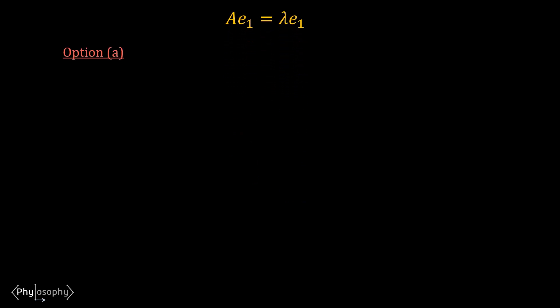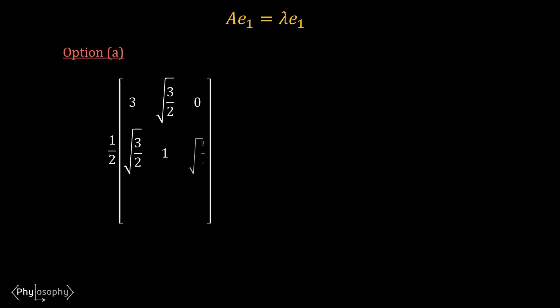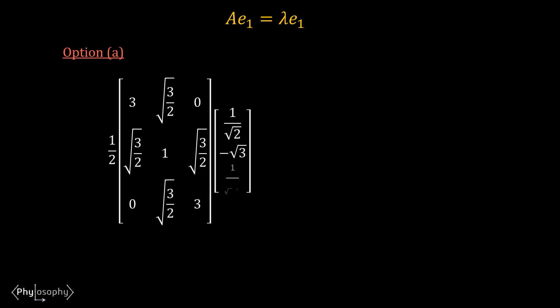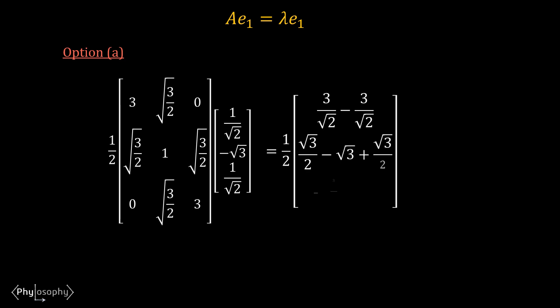For option A, if you multiply the eigenvector with matrix A, you will get a vector whose all elements are 0. Therefore, the eigenvector given in option A satisfies the equation A·e1 = λ·e1 where λ = 0. So it is an eigenvector of matrix A corresponding to eigenvalue 0. Now let's check the other options to see whether the eigenvalue is negative or not.